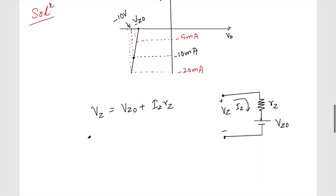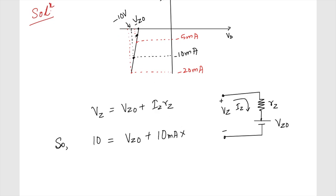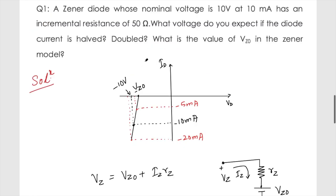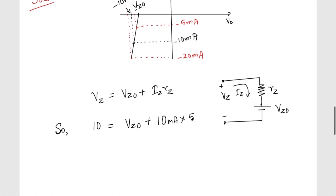At iz equals 10 milliampere, vz is 10 volts. Substituting into vz equals vz0 plus iz times rz: 10 equals vz0 plus 10 milliampere times 50 ohms. This gives vz0 equals 9.5 volts.